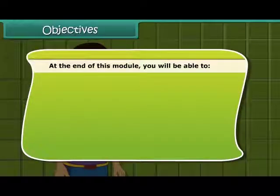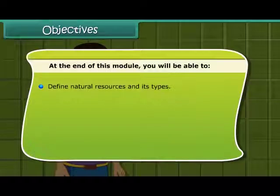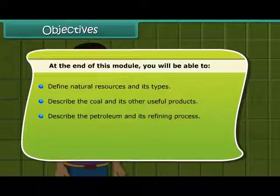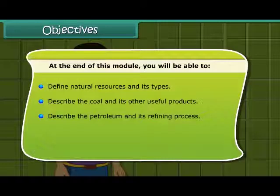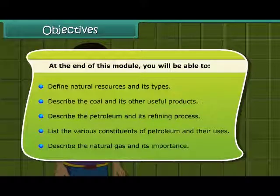At the end of this module, you will be able to: define natural resources and its types; describe coal and its other useful products; describe petroleum and its refining process; list the various constituents of petroleum and their uses; and describe natural gas and its importance.